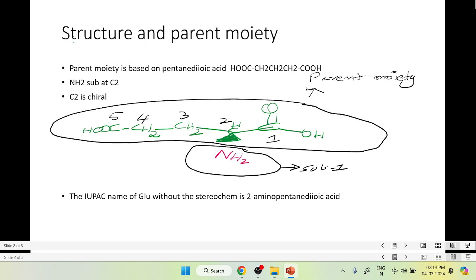We can see that there is an amino group highlighted in pink attached to C2. C2 is also chiral because of four different attachments. So the IUPAC name of glutamate without the stereochemistry is 2-amino pentanedioic acid.